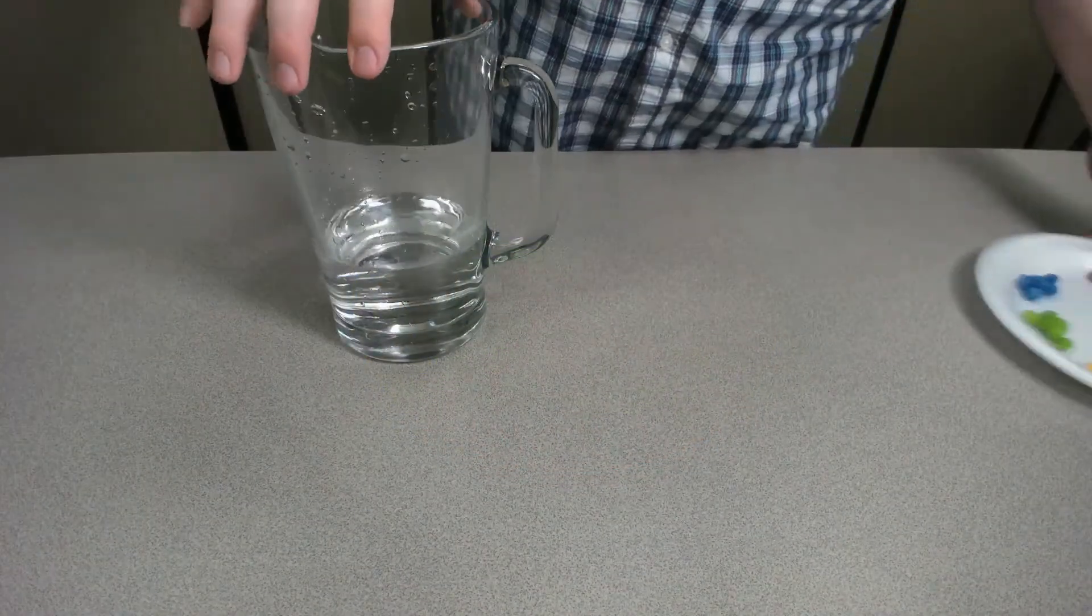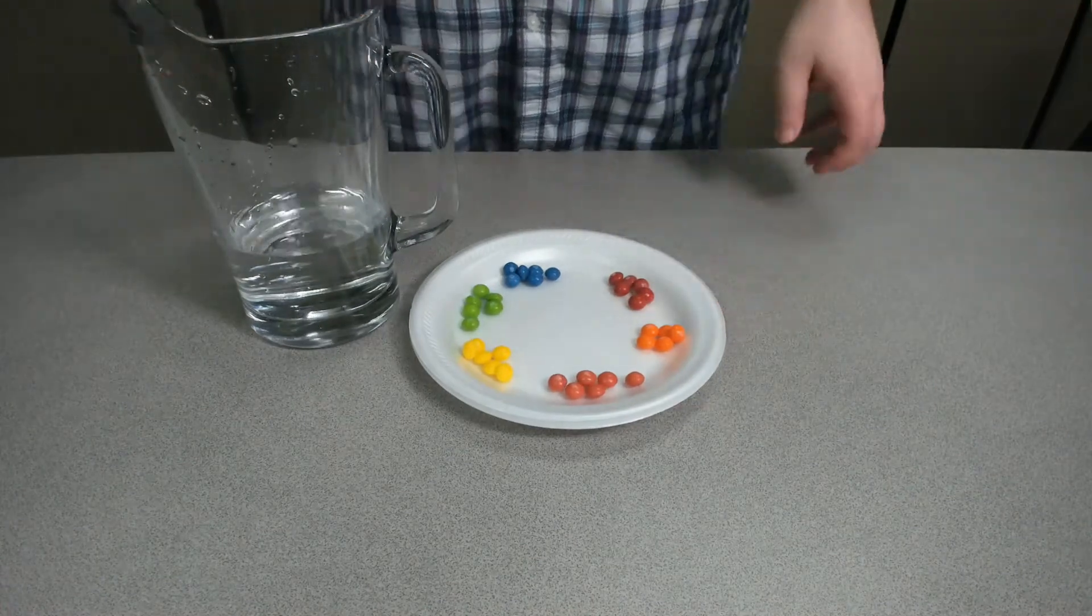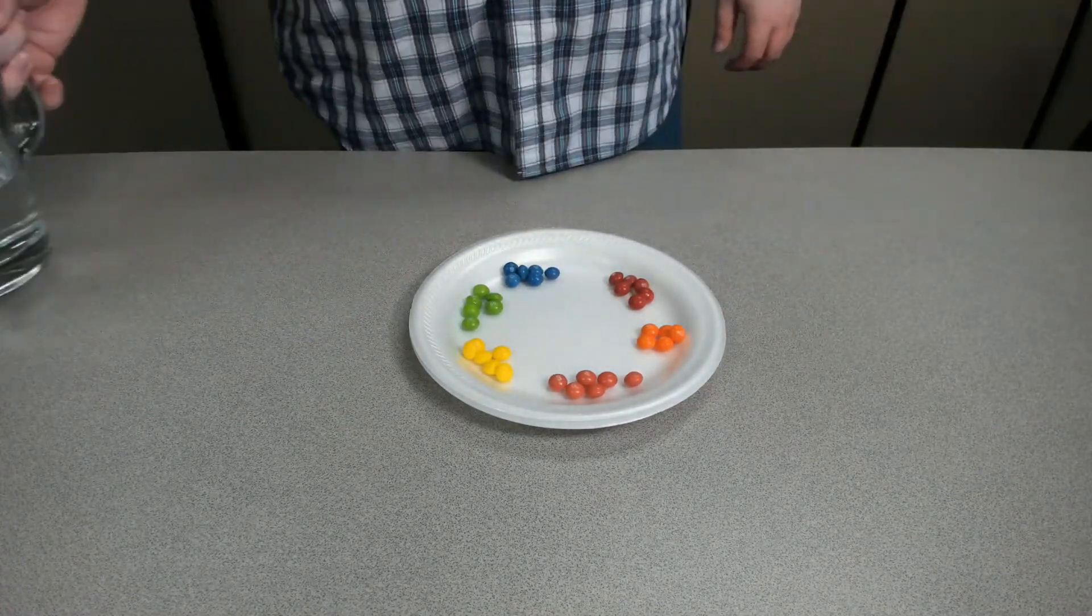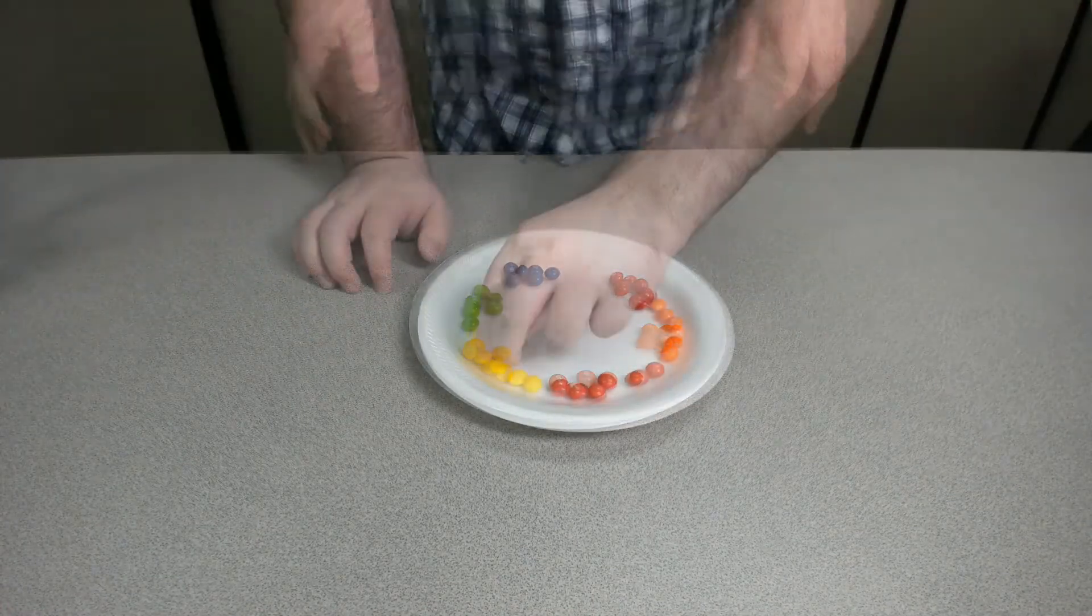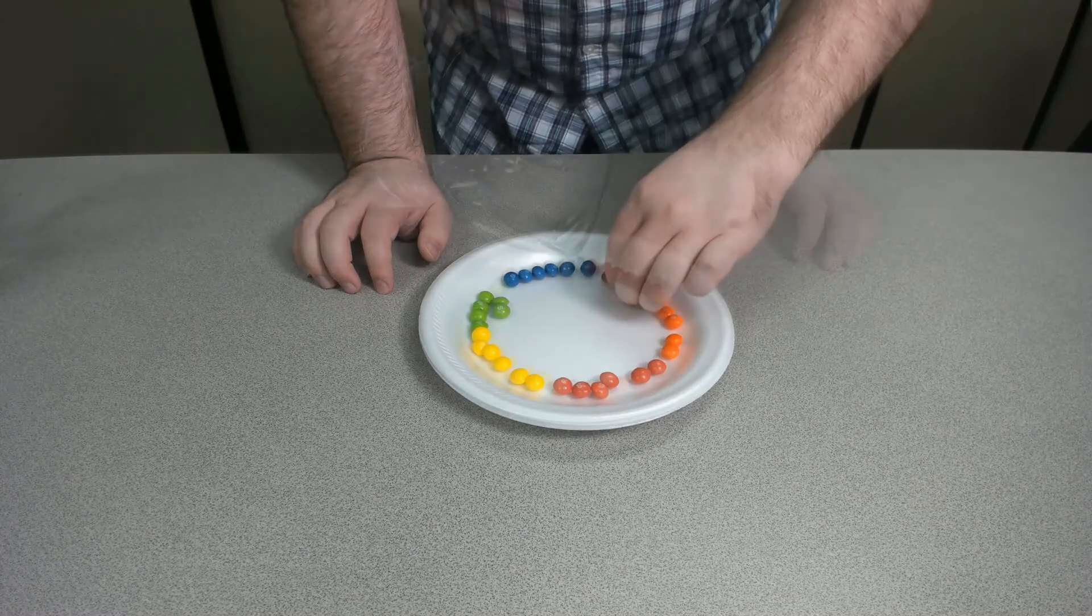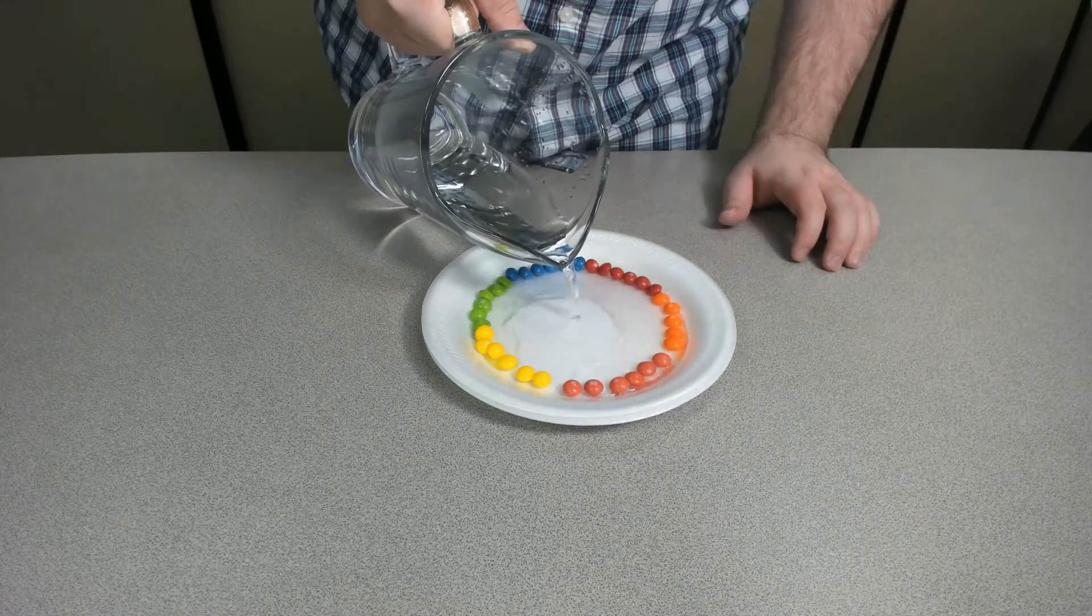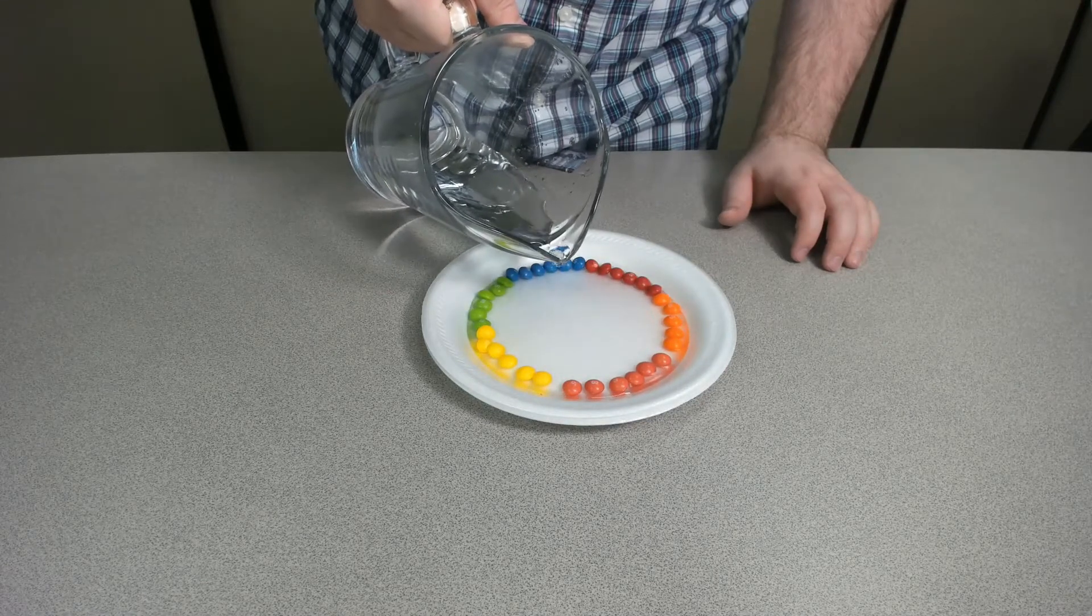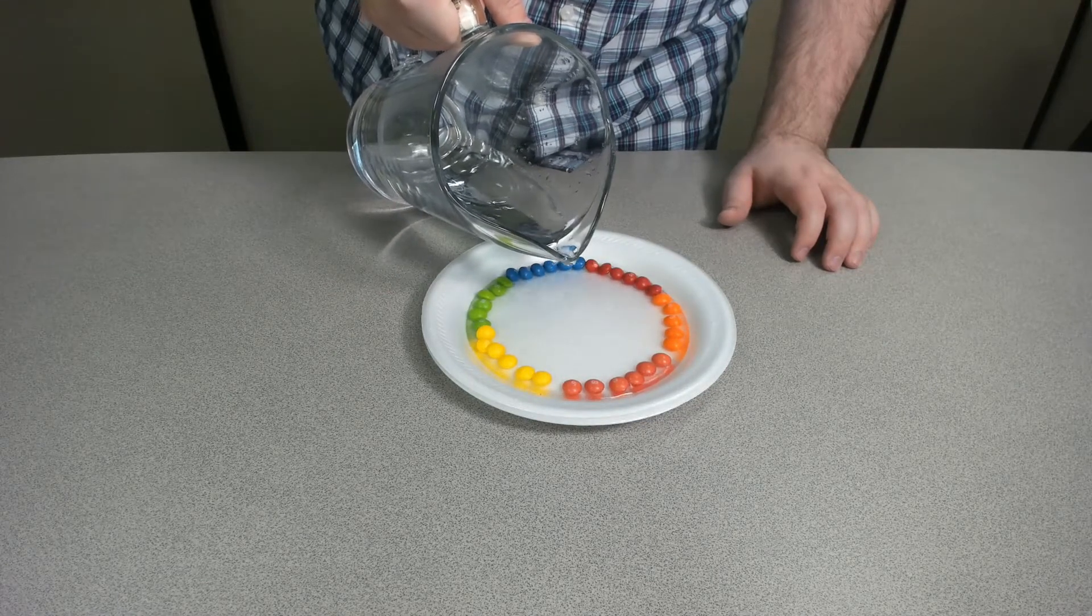For our last craft, you will need a plate that can hold water and as many colorful skittles as possible. With our plate, we are placing the skittles all along the edge using any pattern you see fit. Once they are all set up, we are then pouring warm water on the center of the plate, making sure we pour enough water that our skittles get mostly submerged.